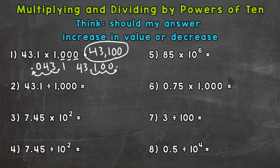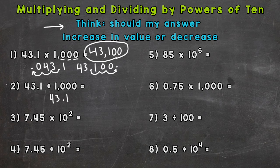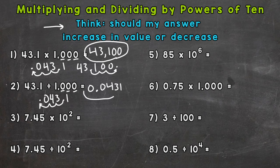Again, we multiplied 43 and 1 tenth by 1,000, so our answer should increase in value. Like the hint up top says, think about whether your answer is increasing or decreasing — that affects which way we move the decimal. So number 2, we have 43 and 1 tenth divided by 1,000. Our answer is going to decrease in value. When we divide, we move the decimal to the left. Our 1,000 is in standard form, so we count 3 zeros and move the decimal 3 times: 1, 2, 3 — and we get 431 ten-thousandths as our answer.